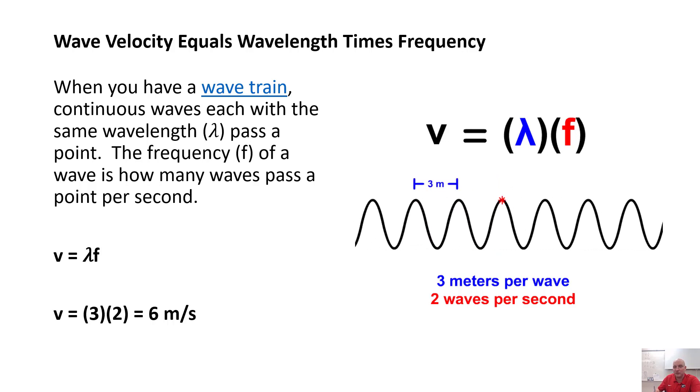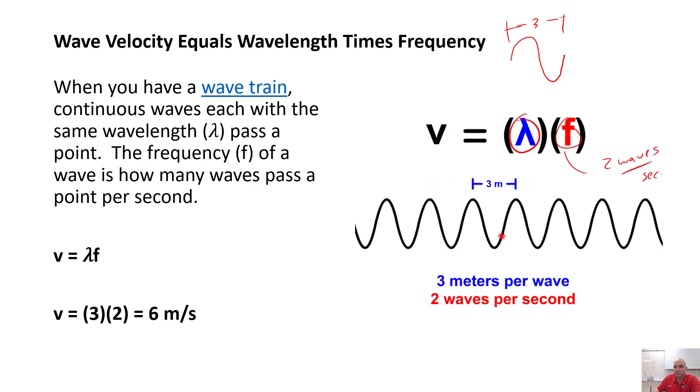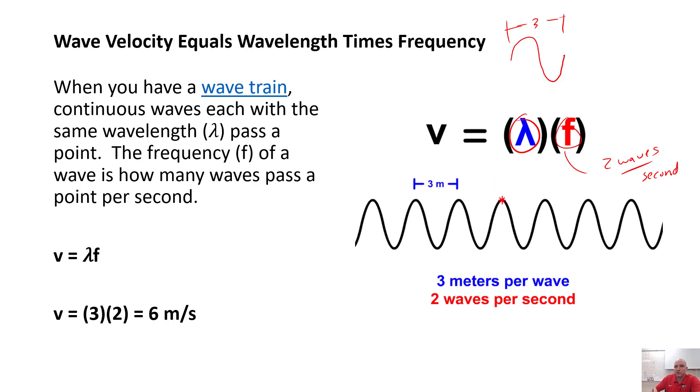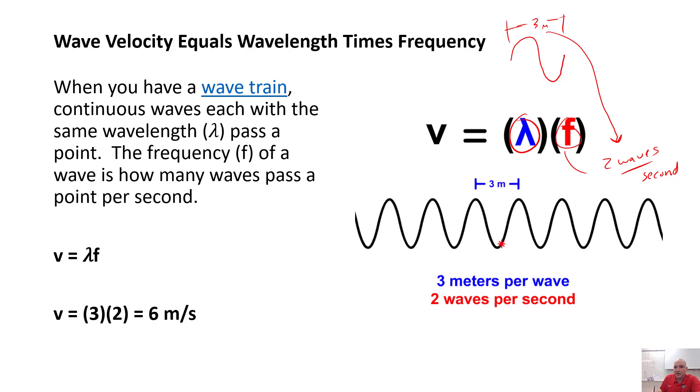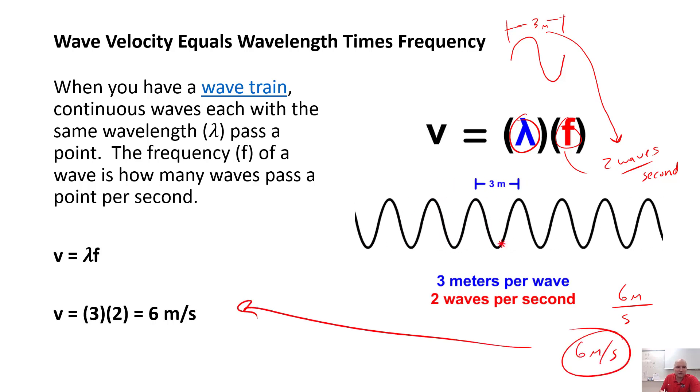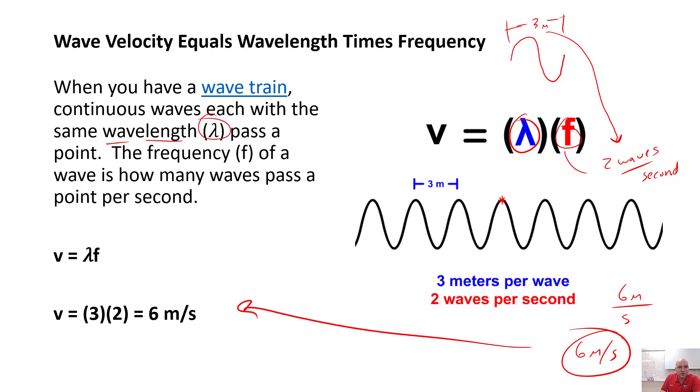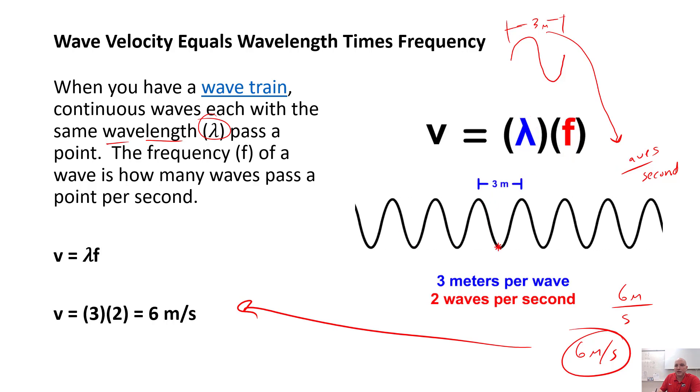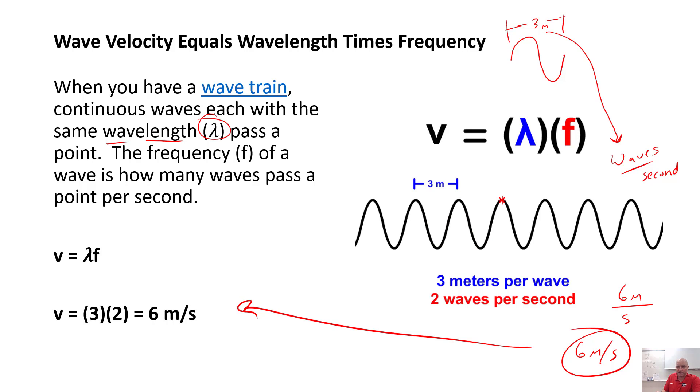But some problems, you're going to be given other information. You might be told that one single wavelength is, in this case, three meters. And then you have a frequency. So how many waves pass you per second? Well, if two waves pass you per second, we can go ahead and we can put that together. If each wave was three meters and two waves pass, six meters of waves are going to pass you per second. And so you get your six meters per second. So what you have to watch out for if you're given length of a wave, wavelength, that's when you're going to use the v equals wavelength times frequency, rearranged in whatever way you need to for the problem.